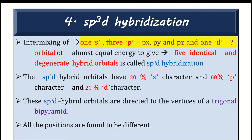Out of these five d orbitals, which will participate in sp3d hybridization? If we calculate the percentage character, we get 20% s — since total is 5, one part of s out of 5 gives 1/5 × 100 = 20% s. Similarly, for p: 3/5 × 100 = 60% p, and 20% d character in sp3d hybridization.